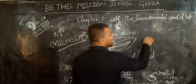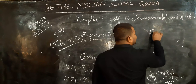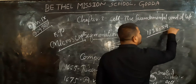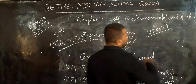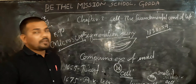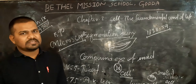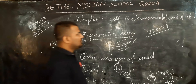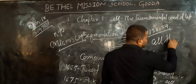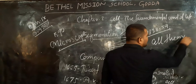Later on, in the year 1838-39, two German scientists, Schleiden and Schwann, published a scientific theory about the cell. That is known as the cell theory.